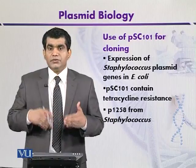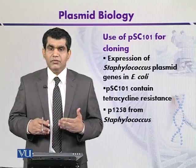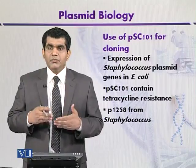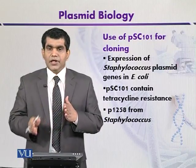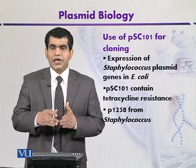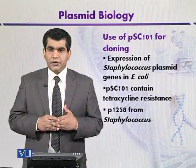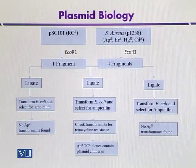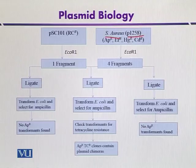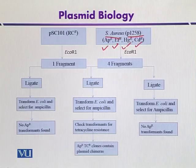When they are ligated together, then the transformants can be screened for the presence of antibiotic resistance genes — that is, tetracycline from PSC-101 and ampicillin from P-1258. These diagrams show the cloning of Staphylococcus aureus genes contained on plasmid P-1258, which contains different types of selectable markers like ampicillin, erythromycin, and the gene for mercury resistance and cadmium resistance.